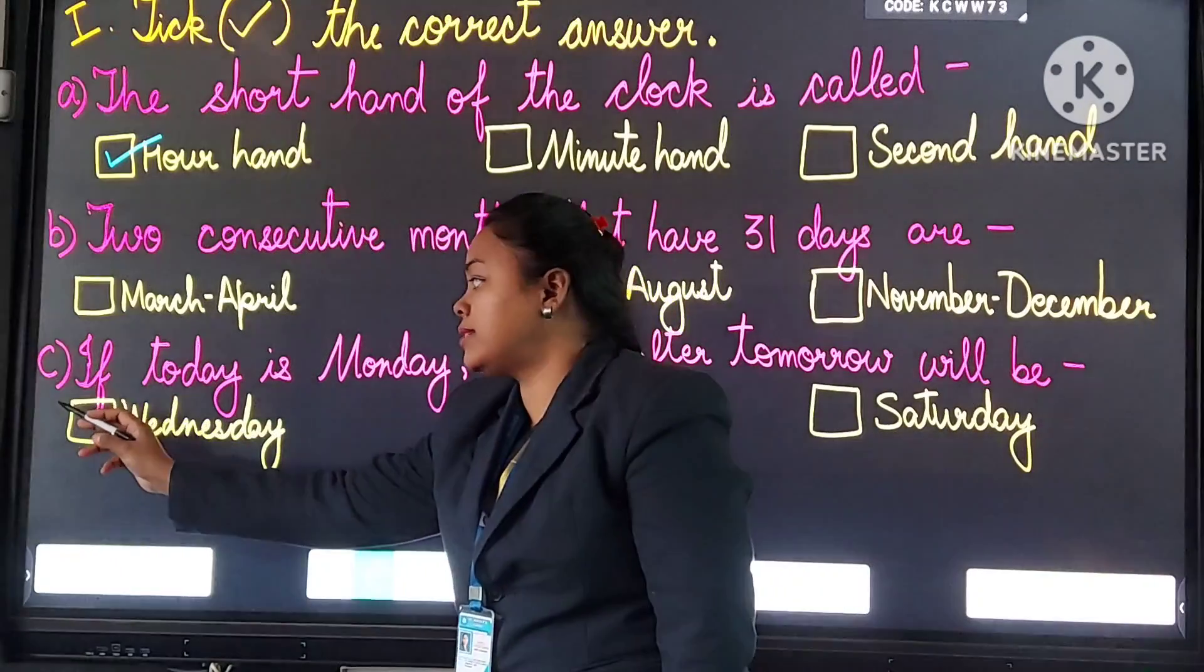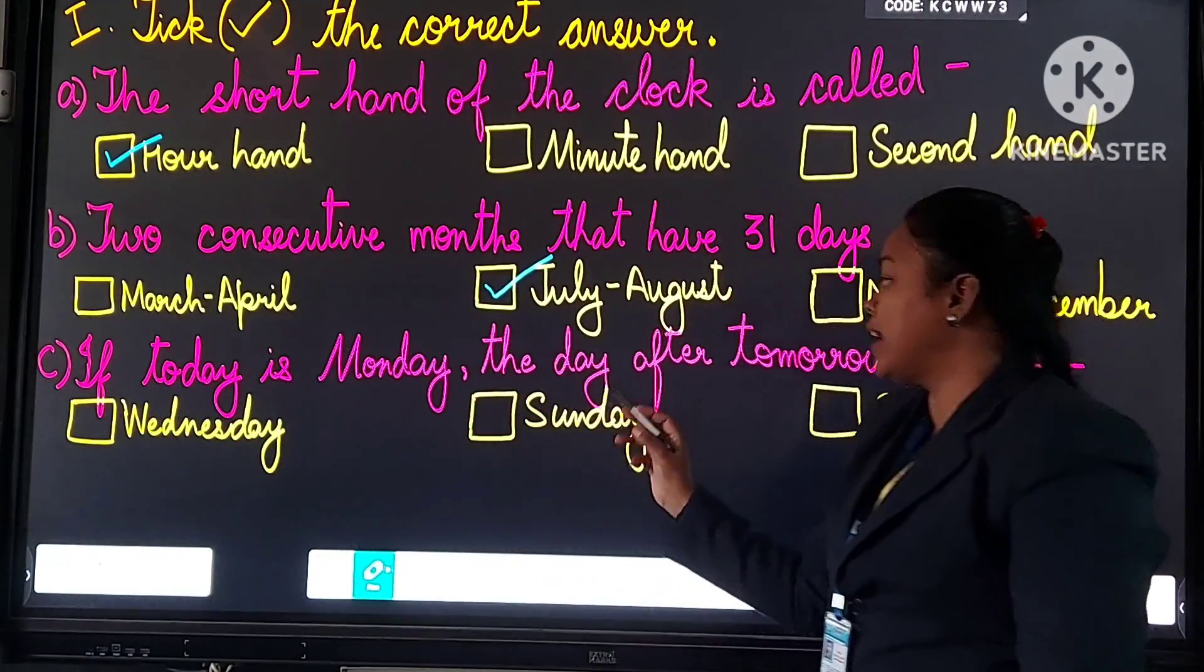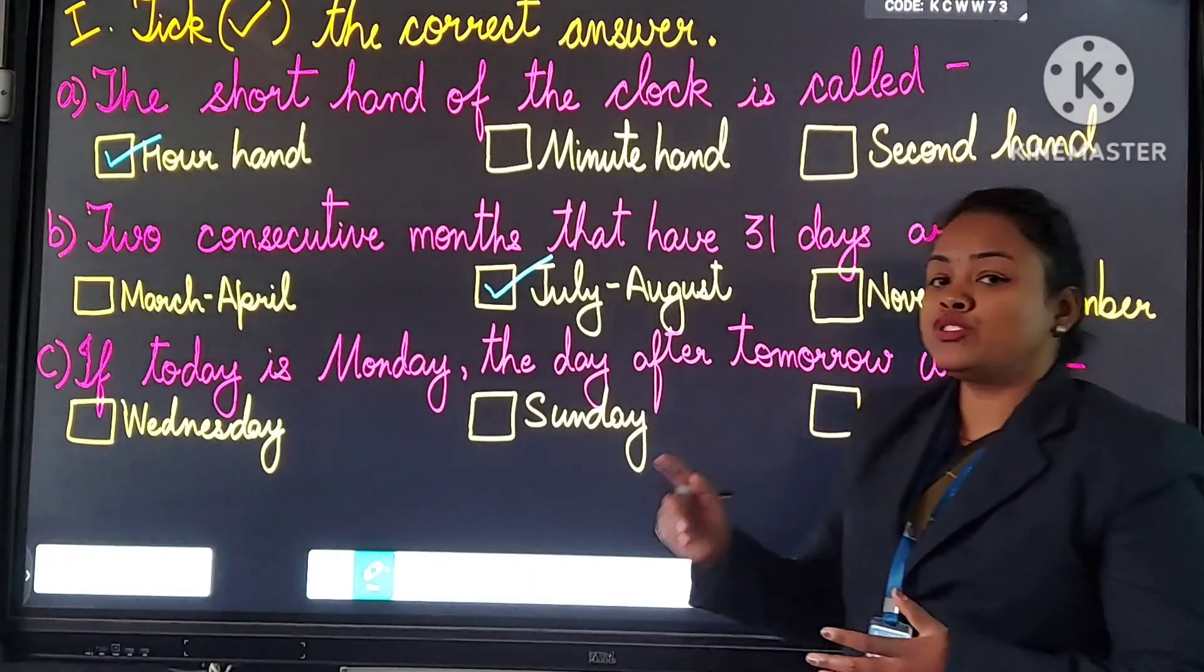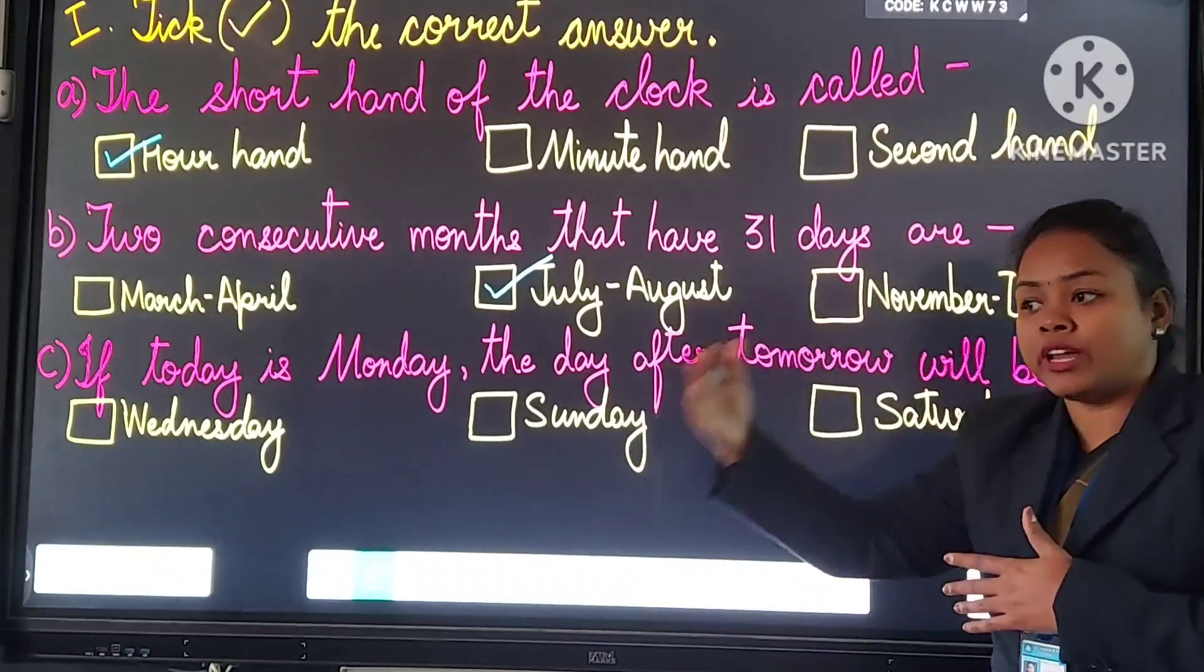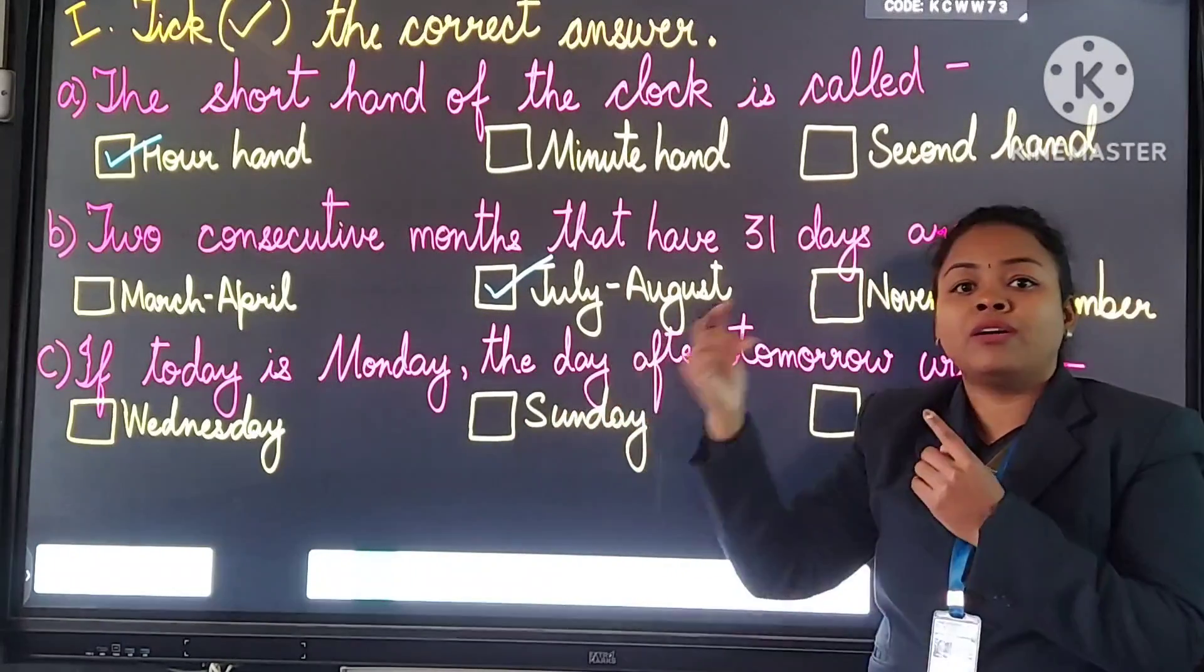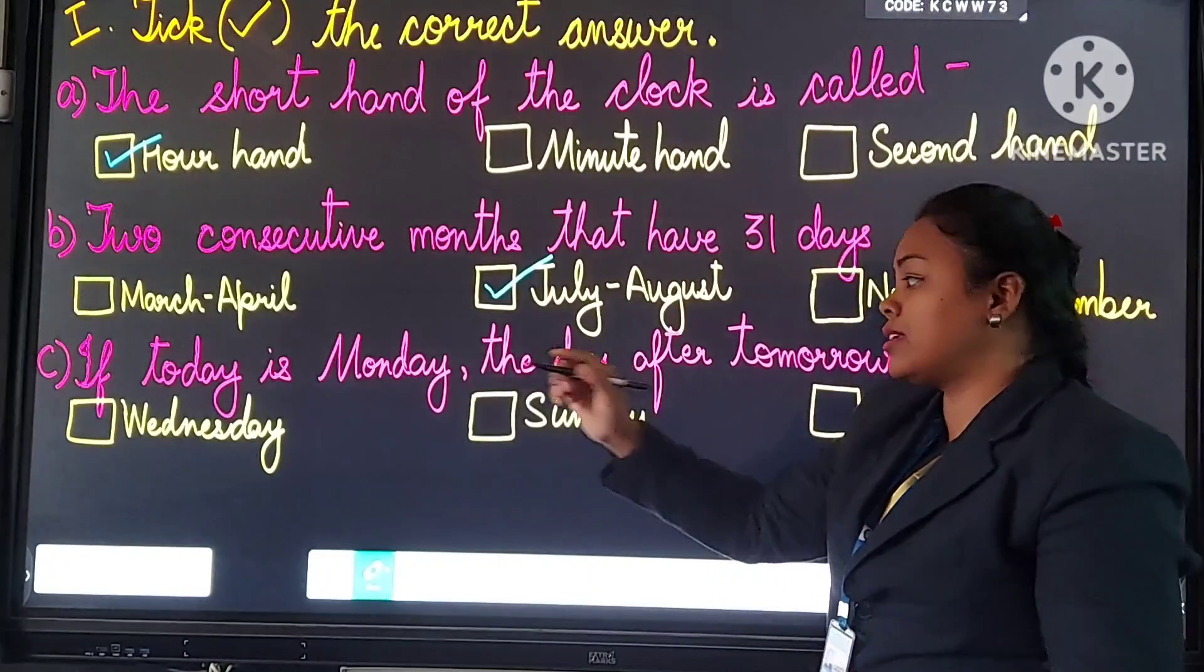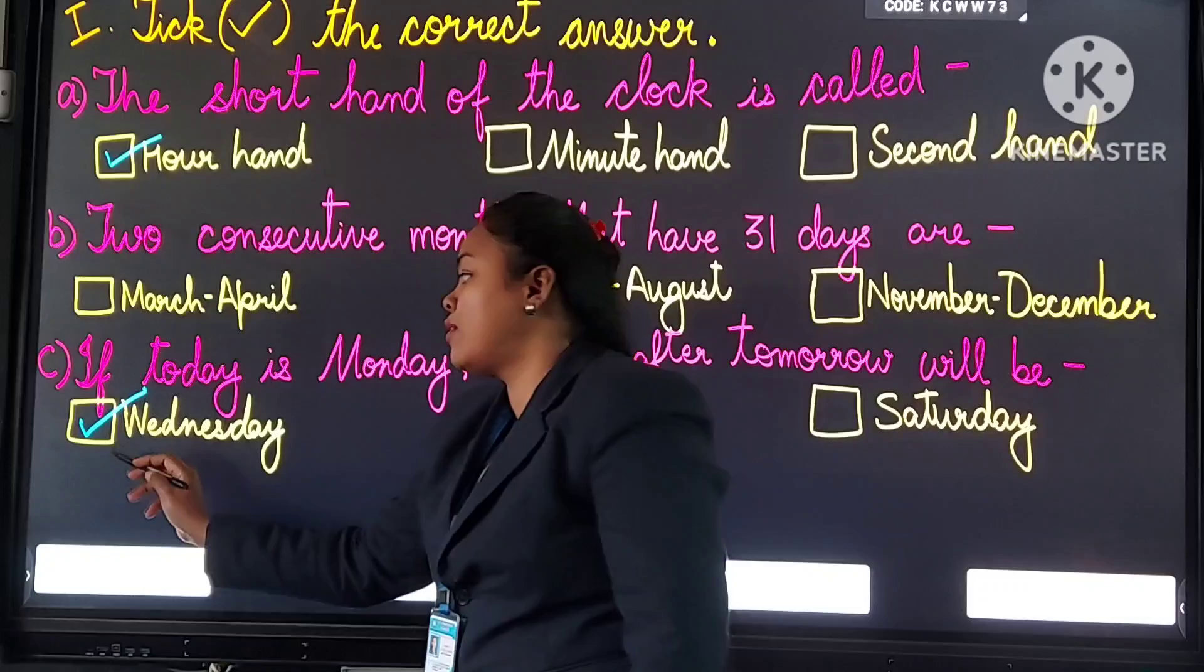Question number C. If today is Monday, the day of tomorrow will be? Options are Monday, Tuesday, Wednesday. Answer will be Wednesday. You will tick here, Wednesday.